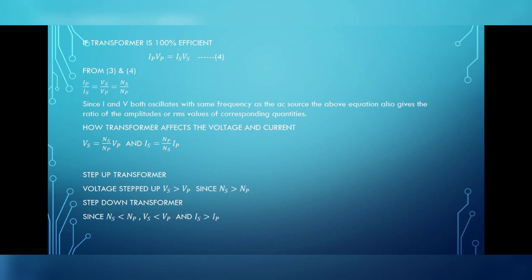If transformer is 100% efficient, IP VP equals IS VS. From equation 3 and 4, IP by IS equals VS by VP equals NS by NP. Since current and voltage both oscillate with same frequency as the AC source, the above equation also gives the ratio of the amplitude or RMS values of the corresponding quantities. Let us see how transformer affects the voltage and the current.